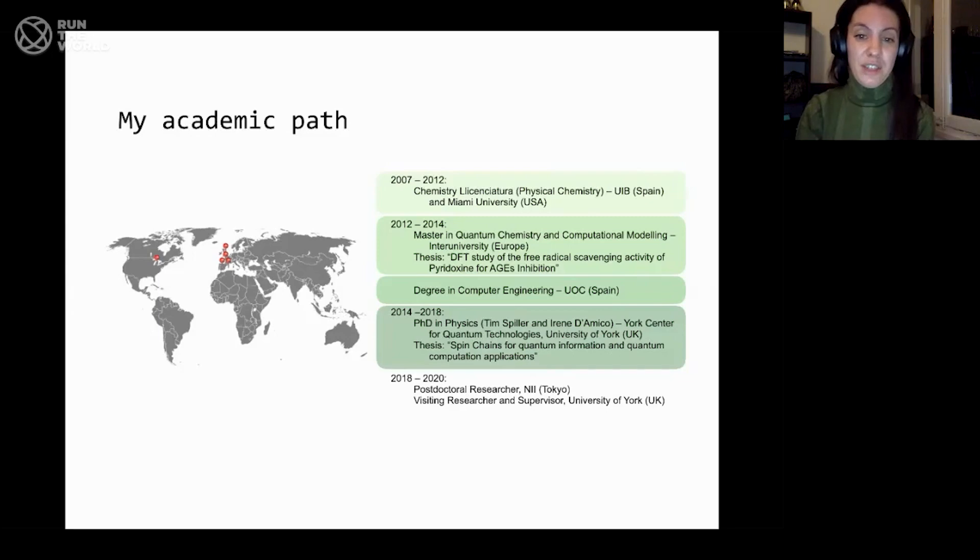Shortly after I finished my PhD, I decided to move to Tokyo, which has been an amazing experience living in Japan. I moved there as a postdoc researcher at the National Institute of Informatics. The National Institute of Informatics is a national center dedicated to informatics research, basically computer science. But our group is a small group that focuses on theoretical quantum computing and quantum information. In the meantime, I've been keeping my collaborations at the University of York as a visiting researcher and supervisor. Every year I love mentoring and supervising undergrad, master's and PhD students.